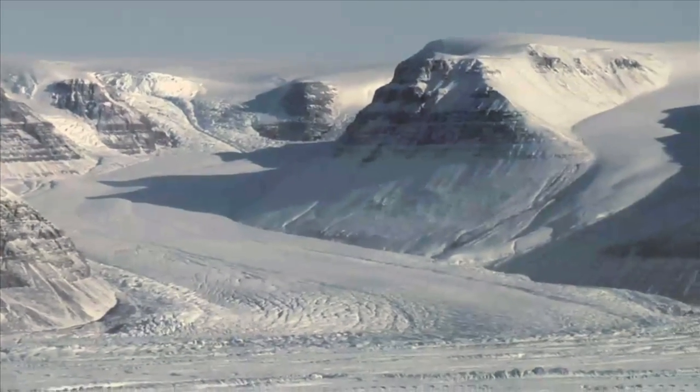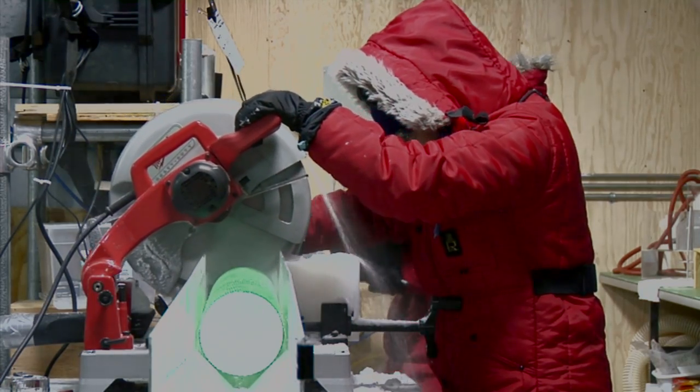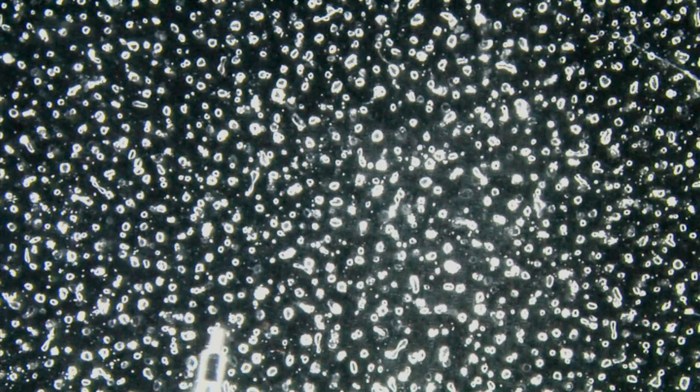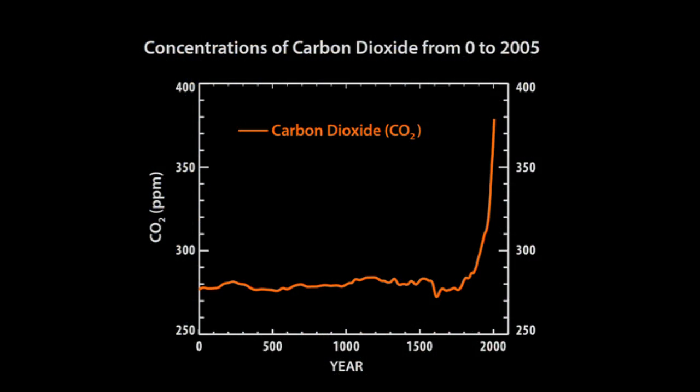To determine how CO2 concentration varied prior to modern measurements, scientists have studied the composition of air bubbles trapped in ice cores extracted from Greenland and Antarctica. These data show that for at least 2,000 years before the Industrial Revolution, atmospheric CO2 concentration was steady and then began to rise sharply beginning in the late 19th century.